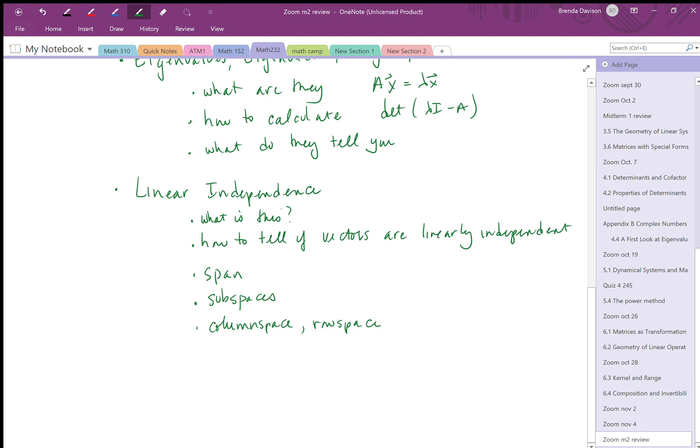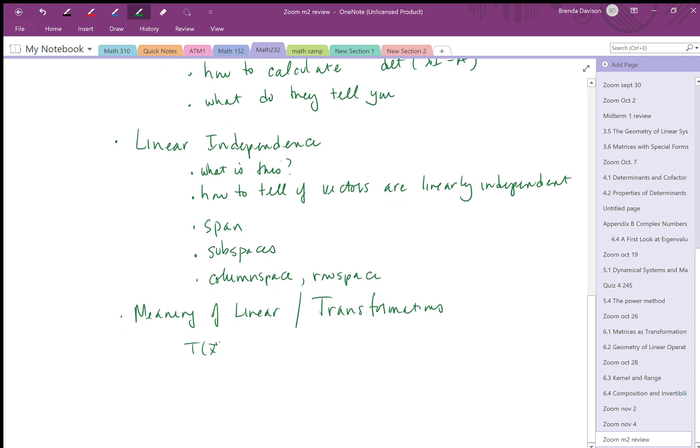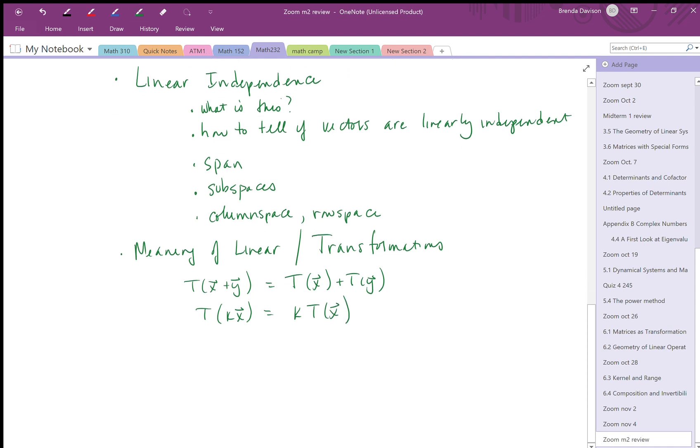The meaning of linear came up when we started to talk about linear transformations. Linear means that if we apply a linear transformation to the sum of two vectors, it equals the sum of the two transformations. Also, if we apply that transformation to k times a vector, we get k times the transformation.